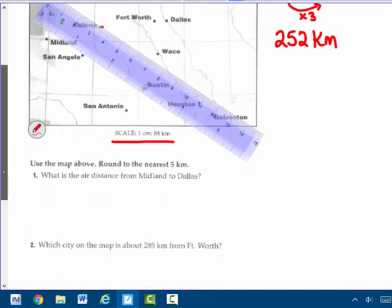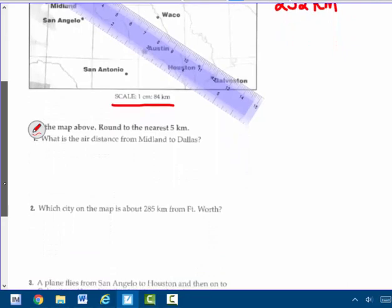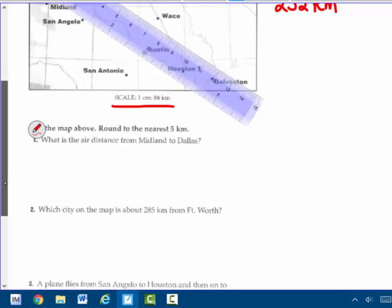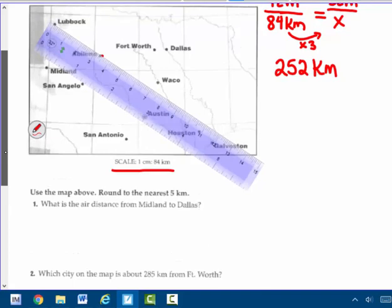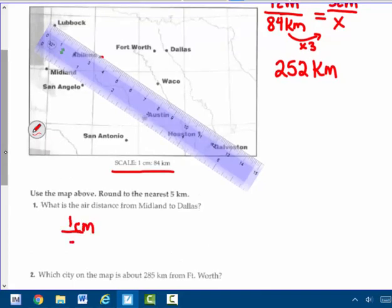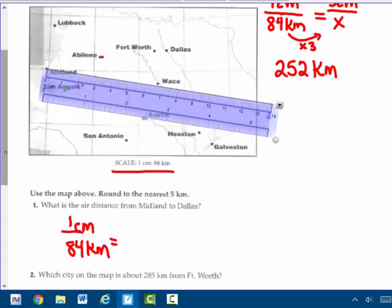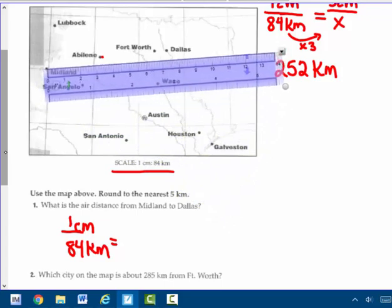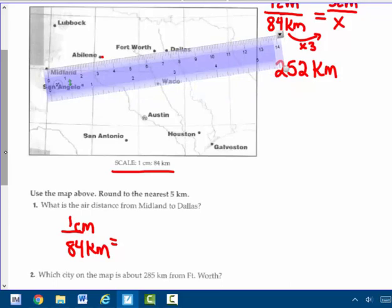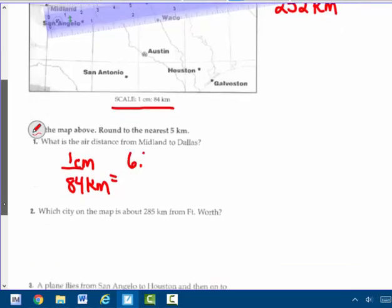Down below this, use the map above, round to the nearest five kilometers. What is the air distance from Midland to Dallas? I know my scale is one centimeter is 84 kilometers. I have to use my ruler and measure this. I found out that it's going to be different because, I'm going to tell you what I actually measured on the paper. I'm doing Midland to Dallas. Actually on my paper, it's six and four-tenths, but this is showing about seven and three-tenths. I'm going to use the six and four-tenths.